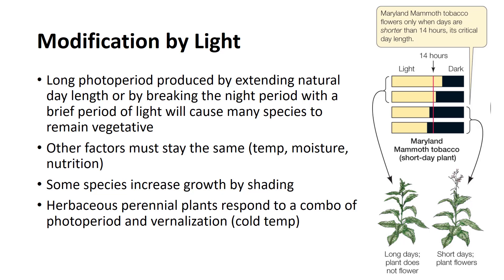However, all other modifiers — temperature, moisture, and nutrition — must be maintained at optimal levels. It is also possible to increase the growth of some species by shading. Many herbaceous perennial plants also respond to a combination of photoperiod and vernalization.